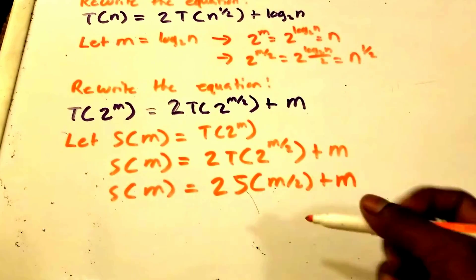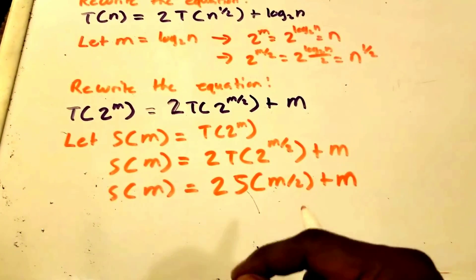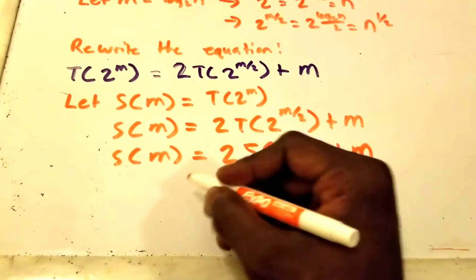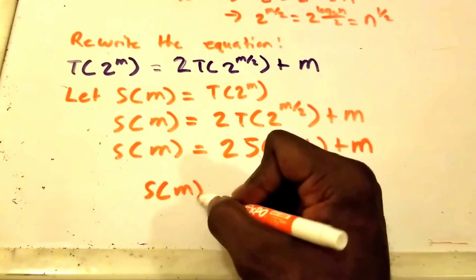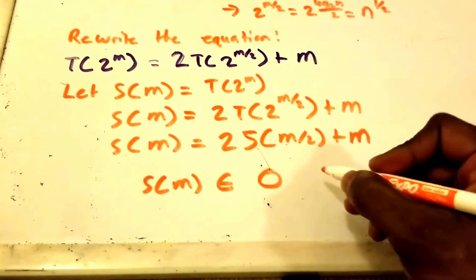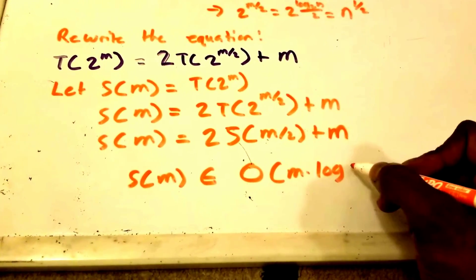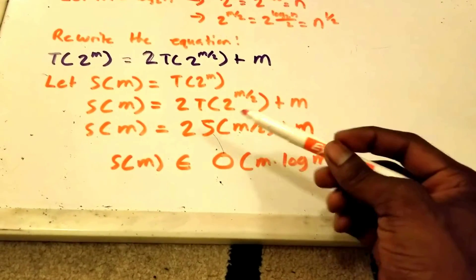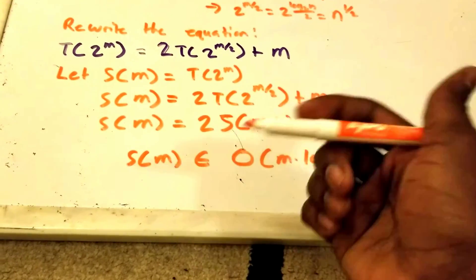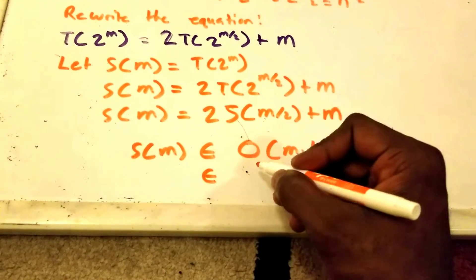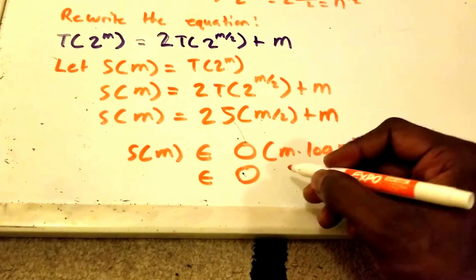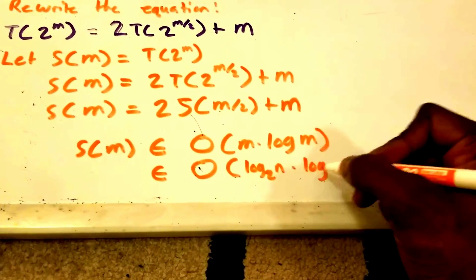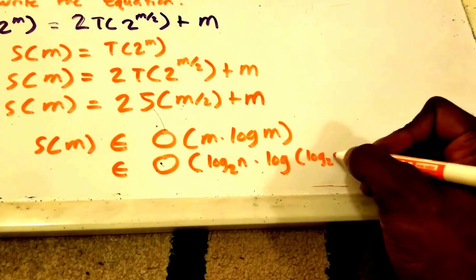We can use the Master Theorem — I'm not going to derive it in this video, but I'll leave a link in the description below. Applying the Master Theorem to S(m) = 2·S(m/2) + m, we find that S(m) ∈ O(m·log m). Since we defined m = log₂(n), that means S(m) ∈ O(log₂(n) · log(log₂(n))).